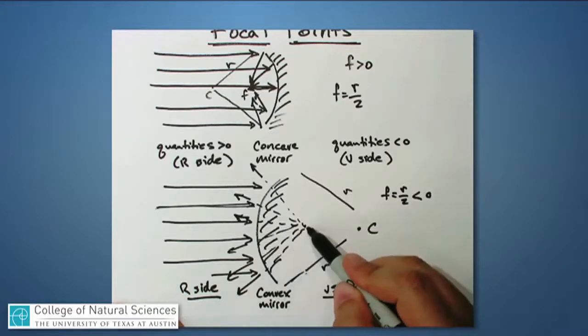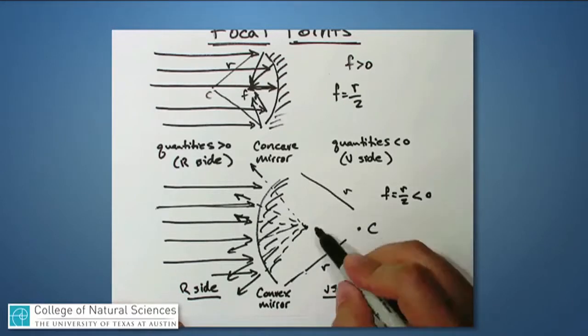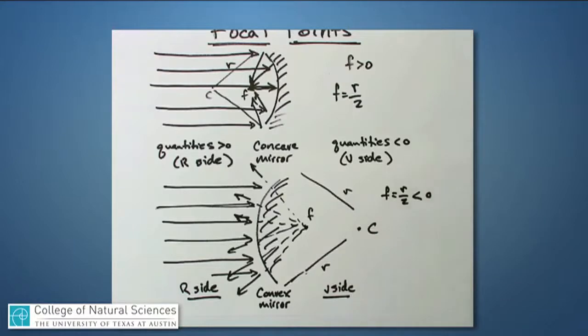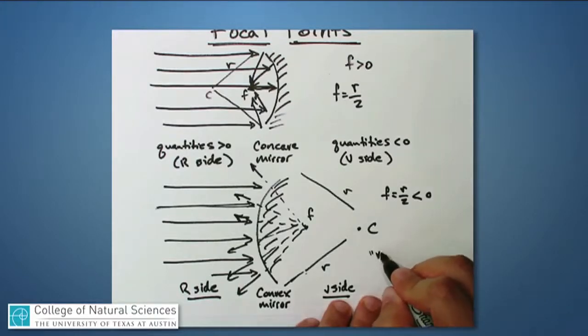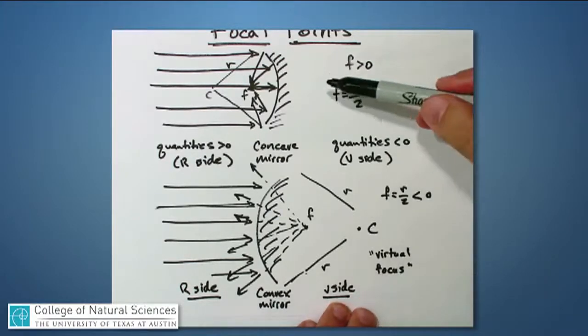So even though no light rays actually coalesced right there, they would appear to if I was standing on the left side of the mirror here and looking back into the mirror. I would think that those light rays all came from a common location. So that's what a focal point means in this case. And because the light rays never actually do converge, this is sometimes called a virtual focus, whereas this is called a real focus.